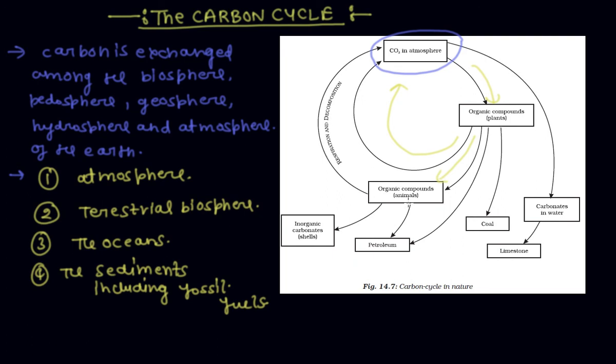Plants convert into organic compounds for animals, then into inorganic carbonates. Organic compounds from plants can also convert into petroleum and coal. Directly, carbonate in the atmosphere converts into carbonates in water, which makes water hard, and then converts into limestone. After organic compounds in animals, respiration and decomposition return carbon back to the atmosphere.